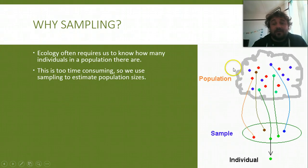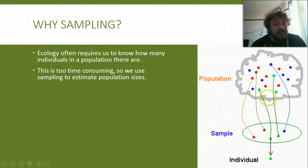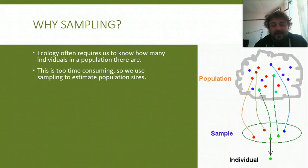Over here we've got our actual population. They've collected a bunch of them — that's your sample — and they can use that to estimate what's in there. It may not be very accurate, or it may be super accurate, depending on how we make it more accurate, which we'll get to in a minute.